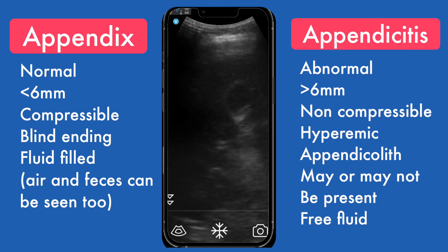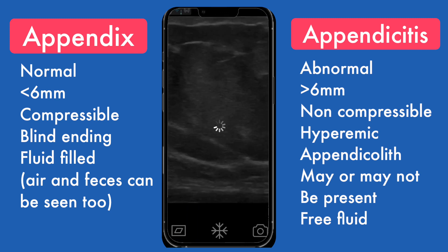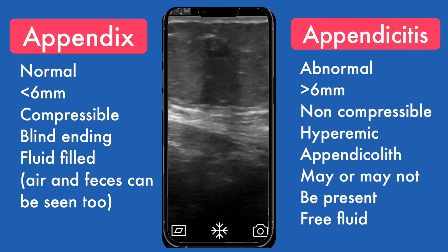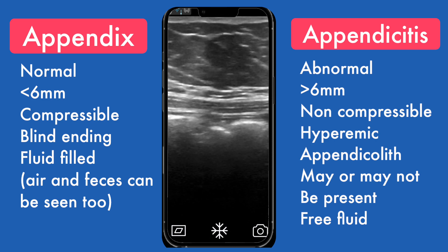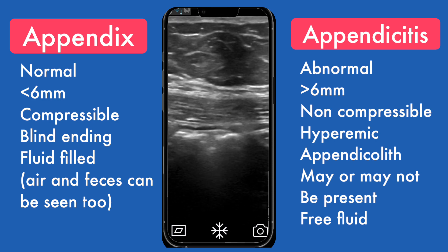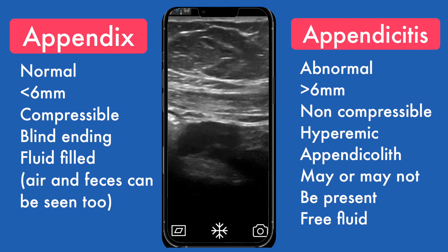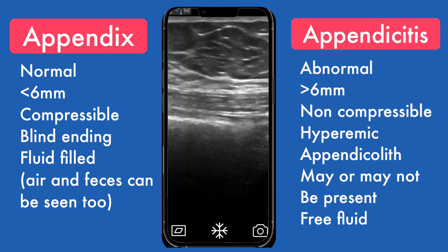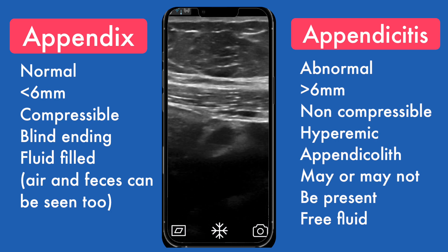Once I'm done with that, I begin to go down to the right lower quadrant. I change the settings to small parts — now you can see it's superficial. That's adipose tissue there, and then muscle. You can see the rectus abdominis. Now I go directly to the iliac fossa to look for the iliac artery and vein — that's my landmark. Many times I find the appendix is just draped over the right iliac artery, and I can begin to image it from there.